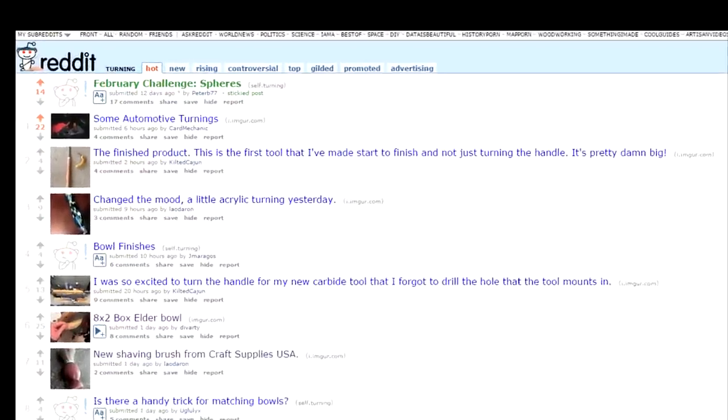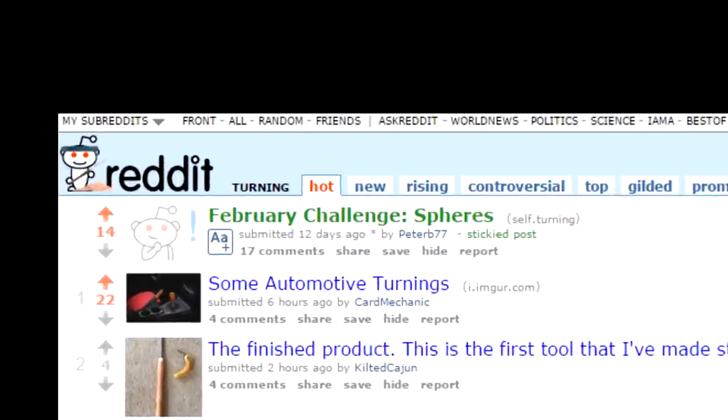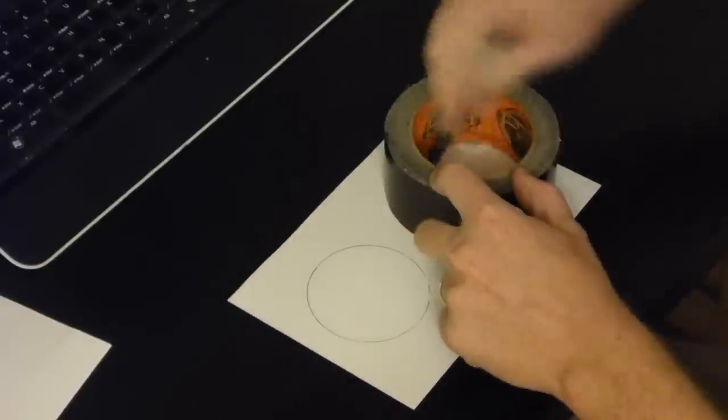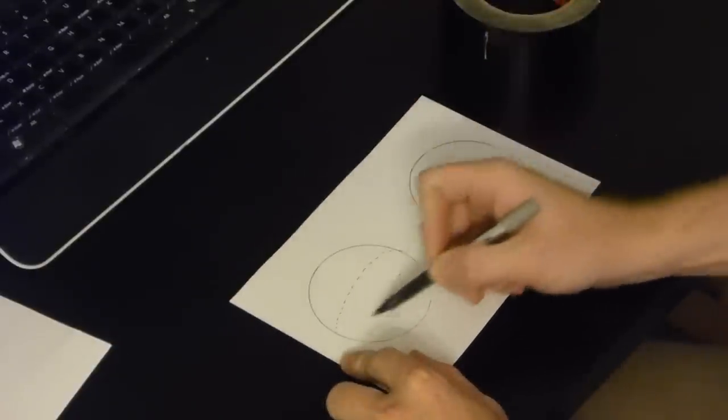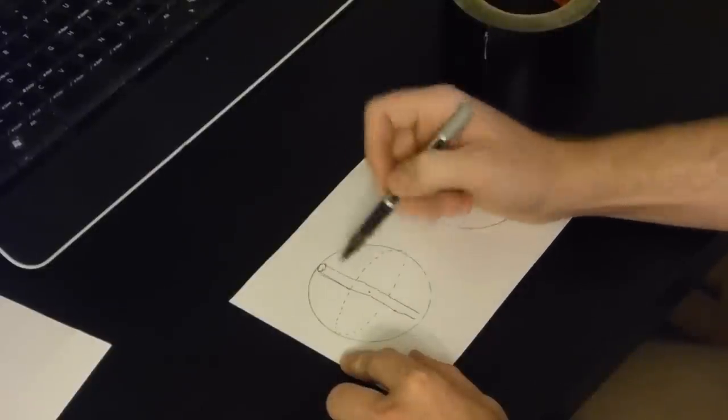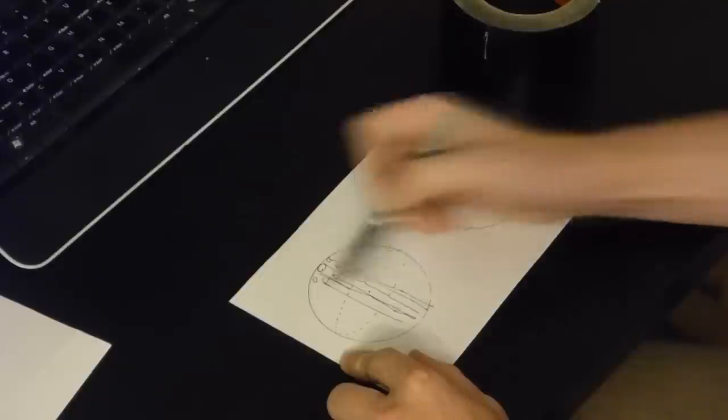One of the websites I read about woodturning has started doing monthly challenges. The first one is to make a sphere on the lathe. Well, the moderators gave us a little warning, so I've had a couple of weeks to think about it, and I got this idea that I just couldn't shake.